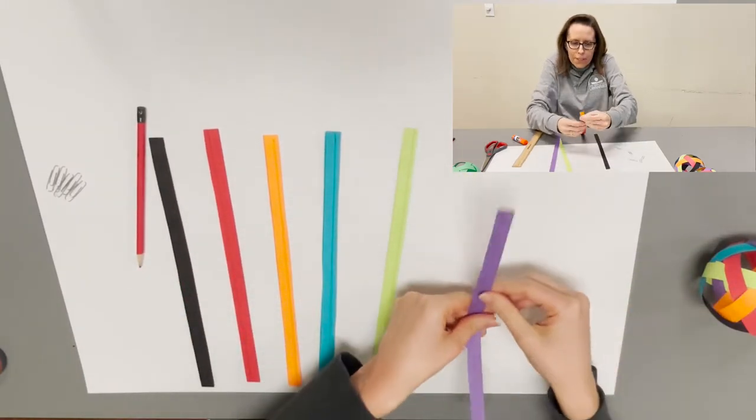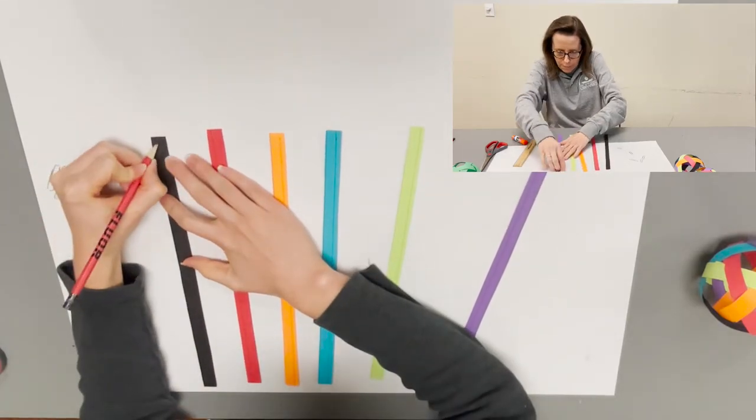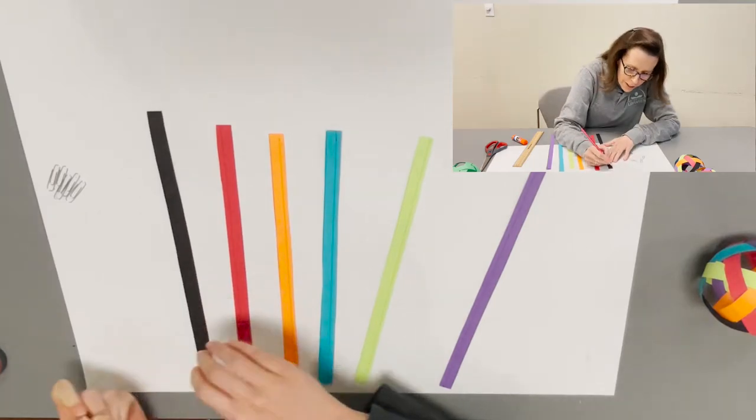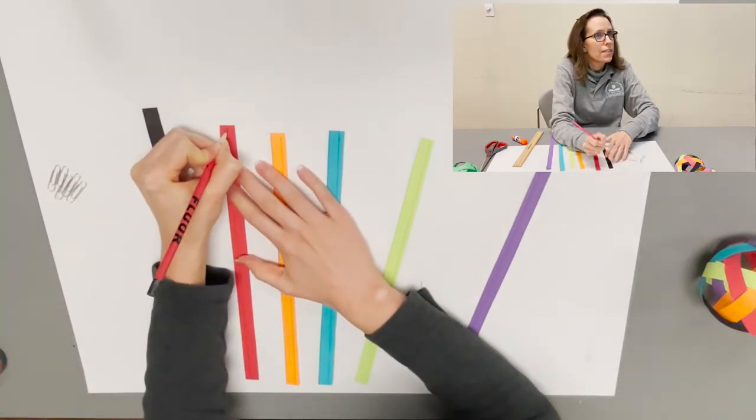We're going to number them to help keep track. In this example, the black one is going to be number one and put a number one on both ends so you're sure to get it back together. The red is two, orange is three.